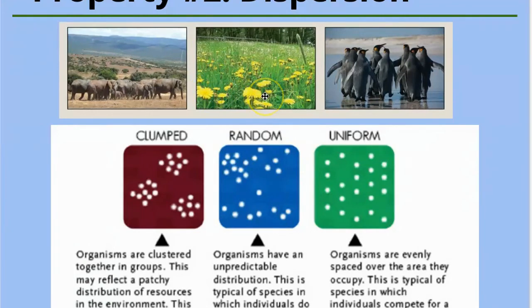they don't really impact each other and they're not impacted much by available resources. And then there's also uniform spacing. This is when the resources are scarce. So in this particular case, they're showing penguins.